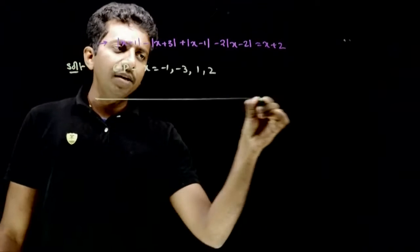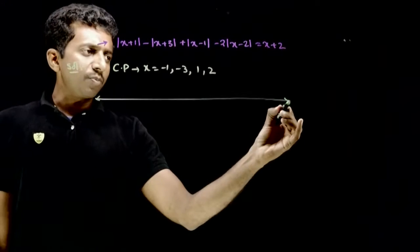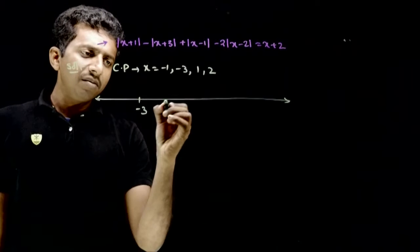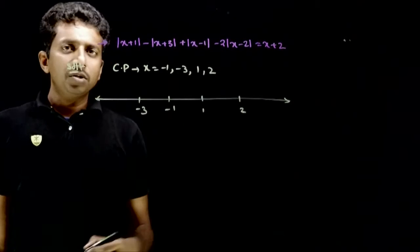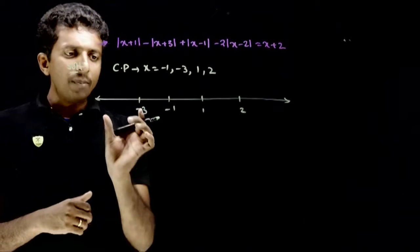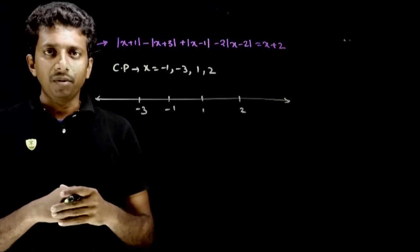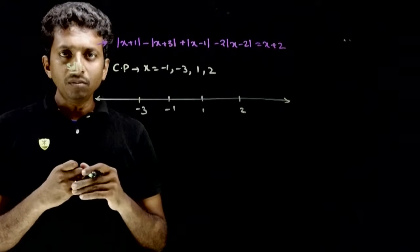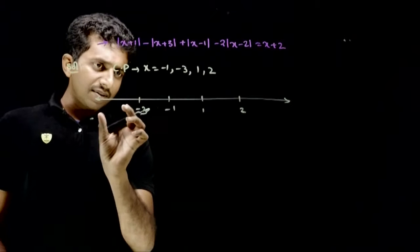Draw the real number line and plot the critical points: -3, -1, 1, and 2. How many intervals did you find? The real number line has been divided into 5 intervals, and you have to solve this equation separately in each of these intervals.